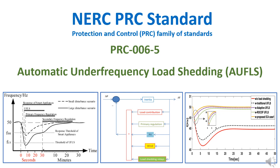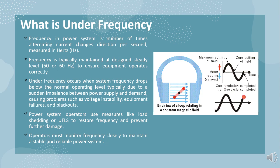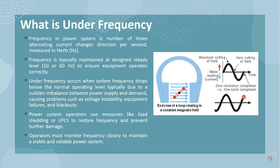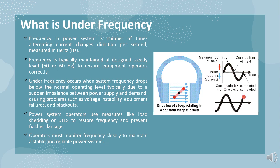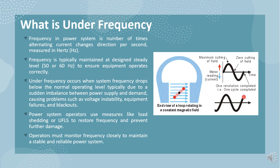Let's start by understanding what under-frequency means. Frequency in a power system is the number of times that an alternating current changes its direction per second, and it's measured in Hertz. To ensure that equipment operates correctly, the frequency is typically maintained at a design steady level of either 50 or 60 Hertz. However, under-frequency occurs when the system frequency drops below the normal operating level. This usually happens due to a sudden imbalance between power supply and demand, which can cause a range of problems such as voltage instability, equipment failures, and even blackouts.